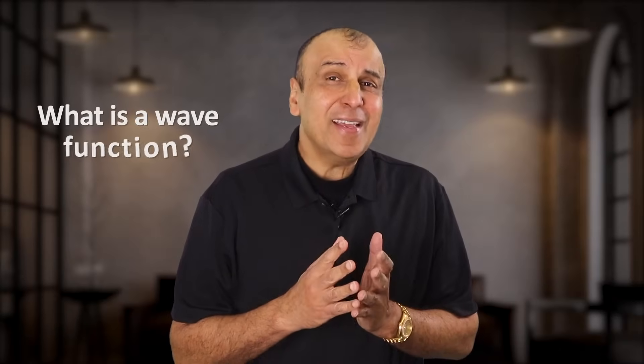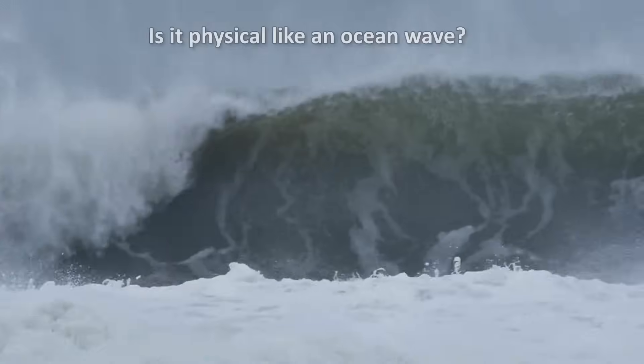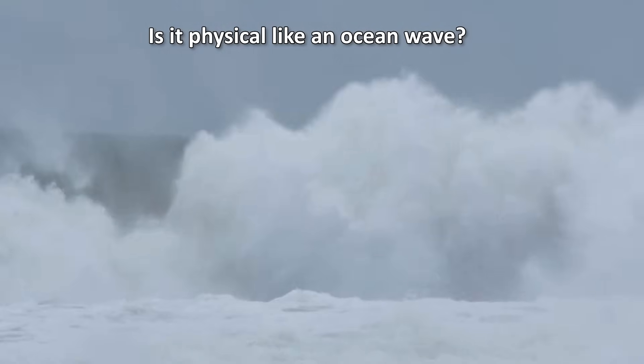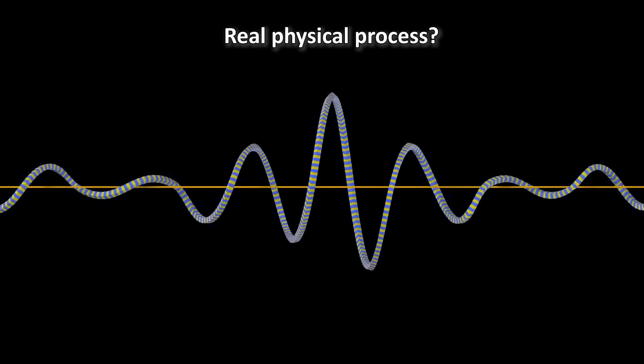So again, what really is the wave function? Is it just math that lets us predict what we will see in a quantum experiment? Or is it a real physical object, like an ocean wave, that tells us about the underlying reality that causes those observations? Some theories attempt to define the collapse as a real physical process. To give you a fuller perspective, I invited fellow YouTuber and friend Sabina Hossenfelder to tell you about these theories as well as her favorite theory.